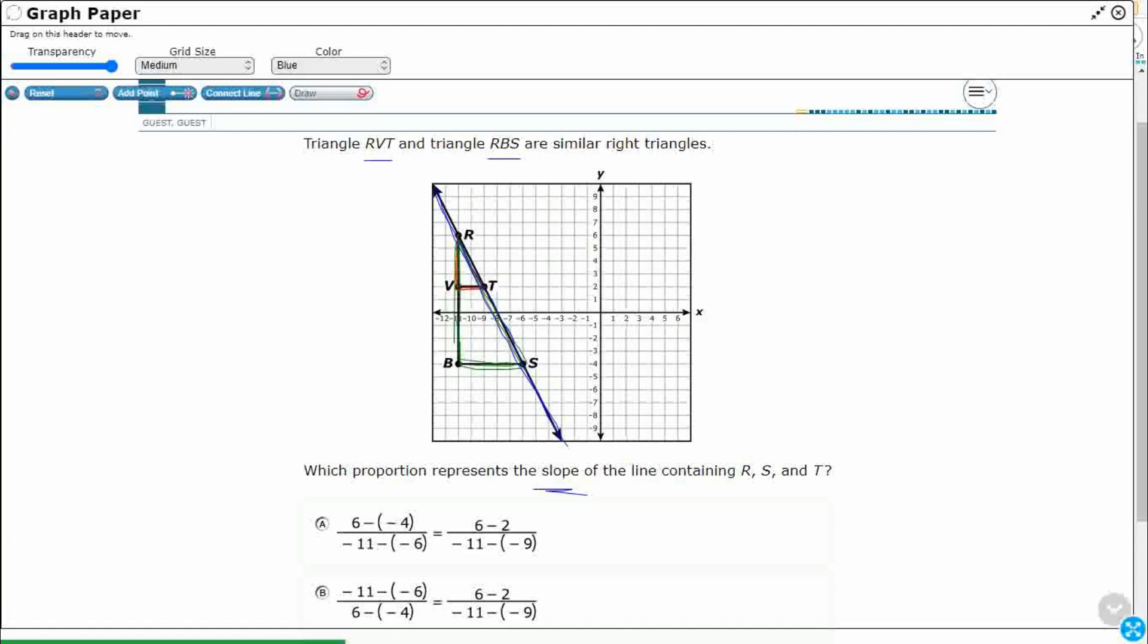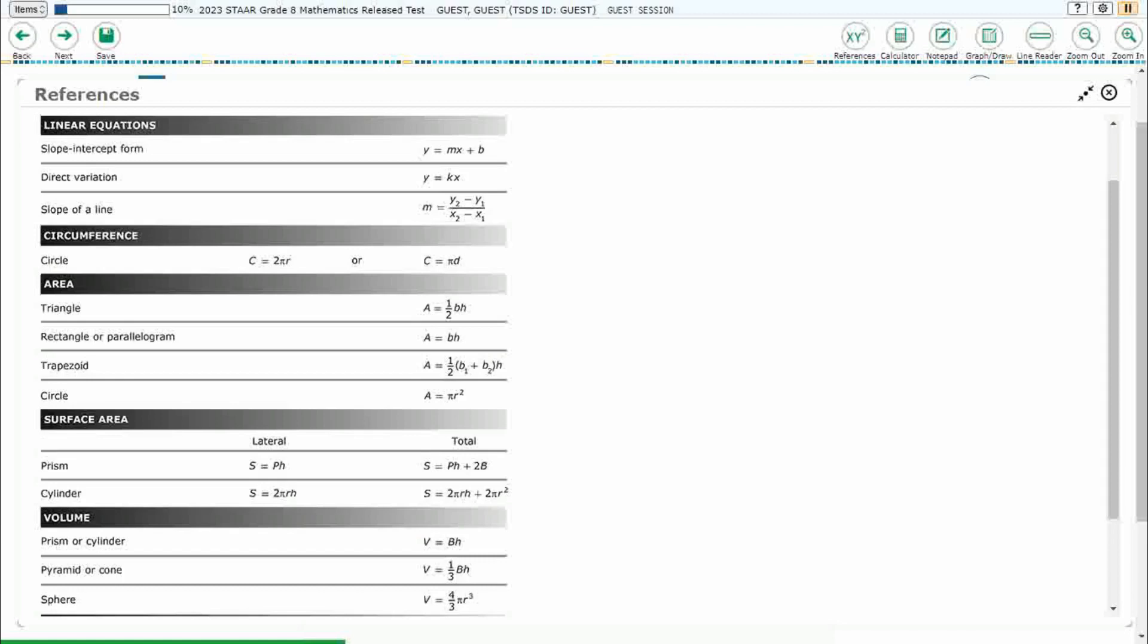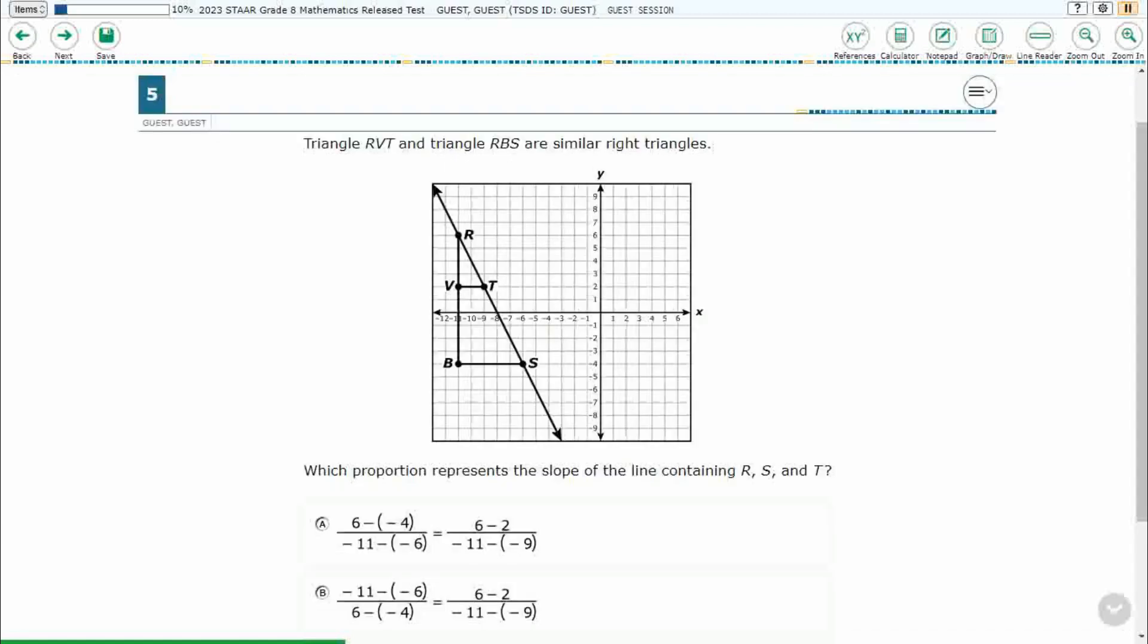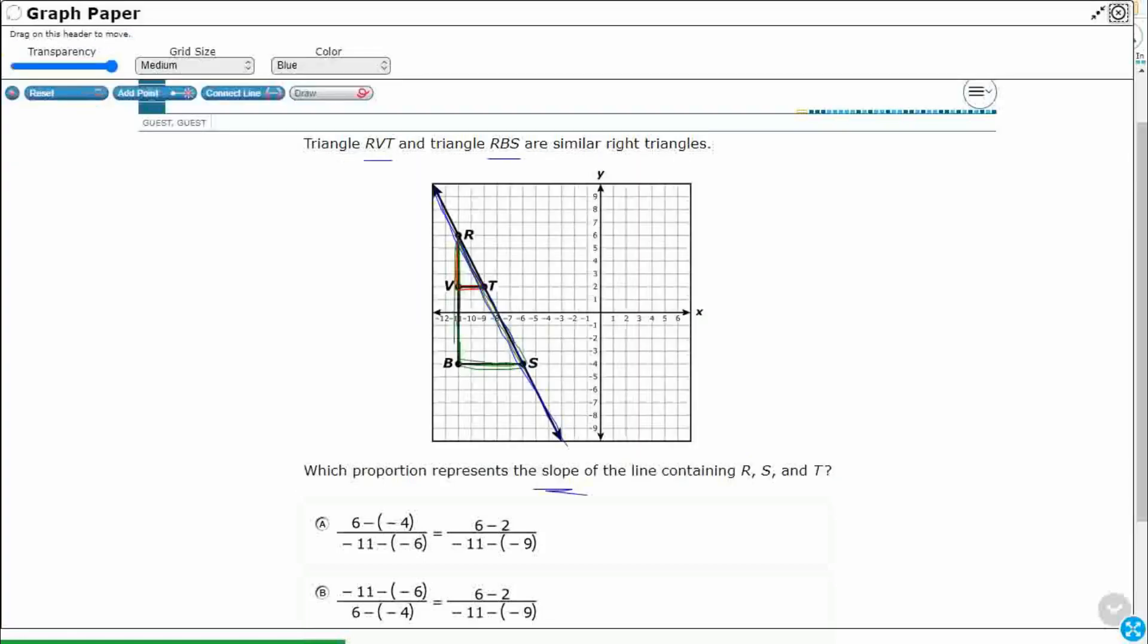So, let's figure out what do we know about slope. Let's check our reference materials. Hopefully we remember that it's going to be up here at the top in linear equations. It's that third section, slope of line, M equals change in Y over change in X. So let's do that. Let's just look at the change in Y over the change in X.